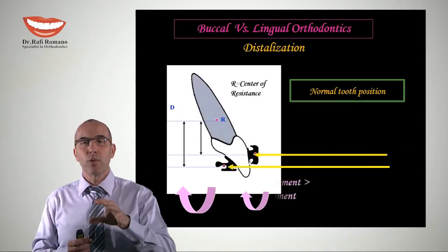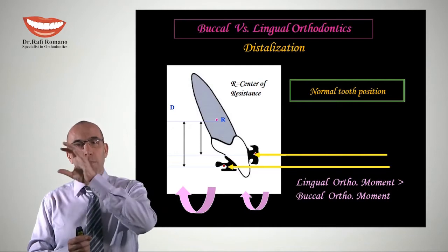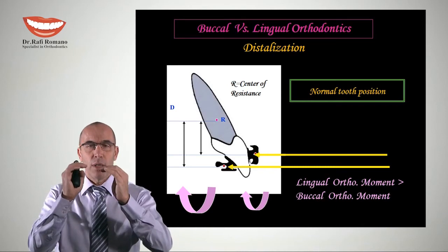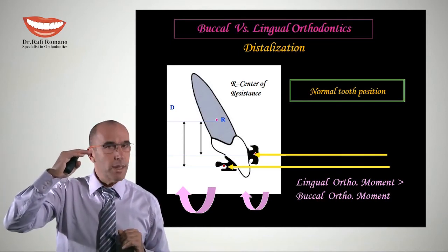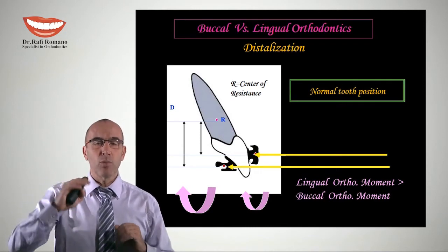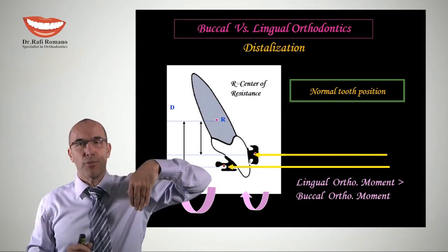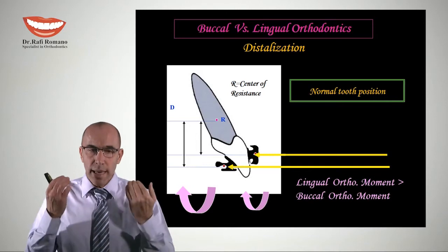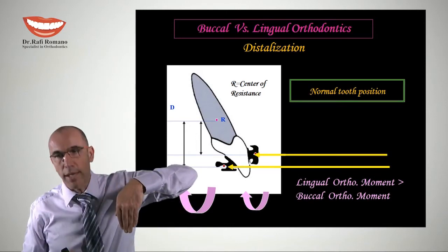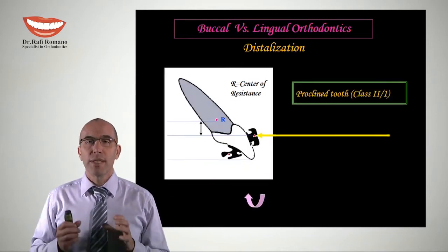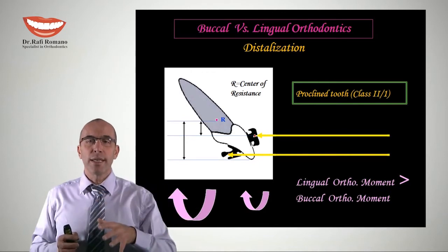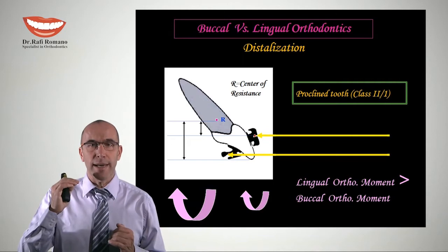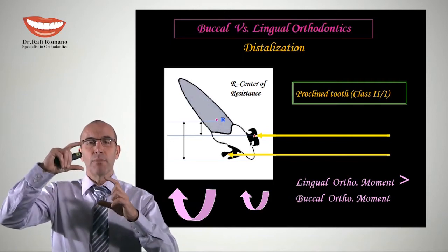In a normal tooth position, comparing the bracket location in buccal orthodontics versus lingual orthodontics, you can see that by moving the bracket lingually we actually bring the bracket down. So if you apply a horizontal force of the same magnitude, the lingual bracket will create a much larger retroclination moment on the tooth. In a proclined tooth, the difference in height between the buccal bracket and the lingual bracket relative to the center of resistance is now an even bigger gap between these two techniques.